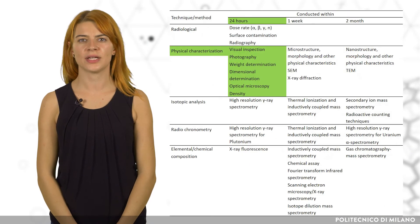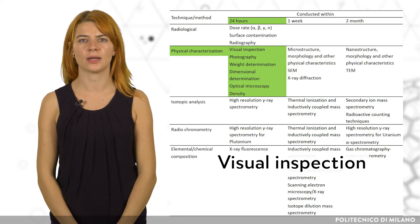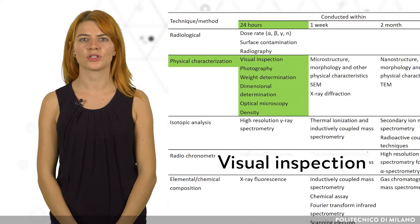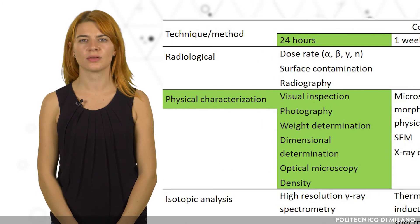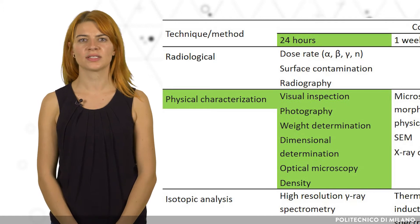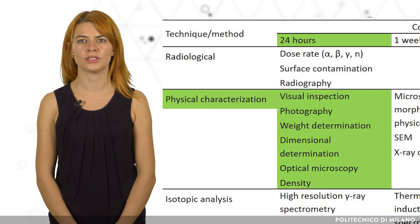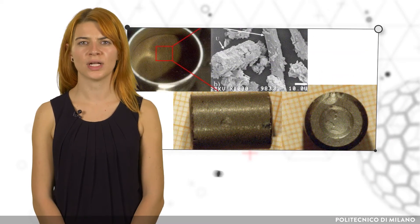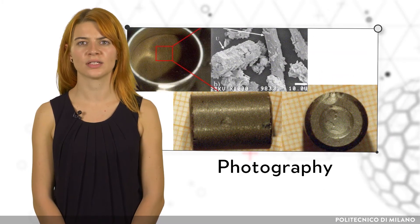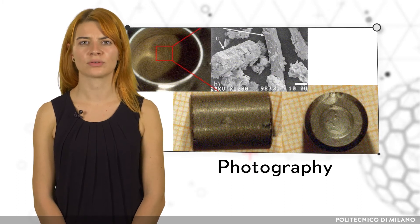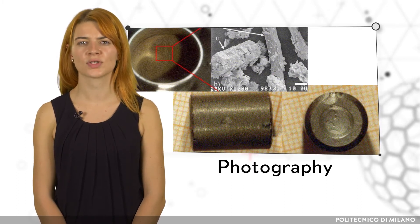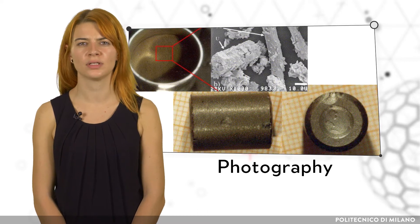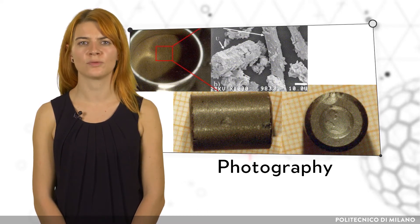After estimating the radiological threat, a visual inspection of the sample should be carried out in the first 24 hours. This includes determining the physical dimensions, weight, and density of the sample. In the case of seized nuclear reactor fuel pellets, the manufacturer and reactor type for the initial use can be assigned from the geometry of the pellets. The visual inspection should be well documented by photos and, if appropriate, corroborated by optical microscopy. Further analysis often requires mechanical manipulation of the sample, which results in the loss of the original morphology.